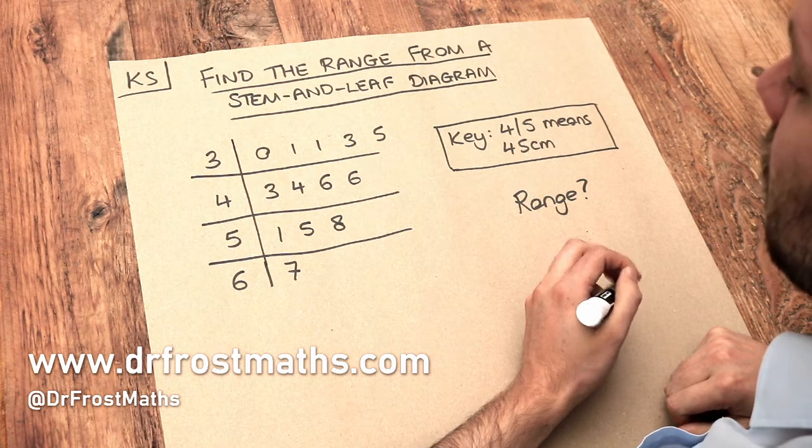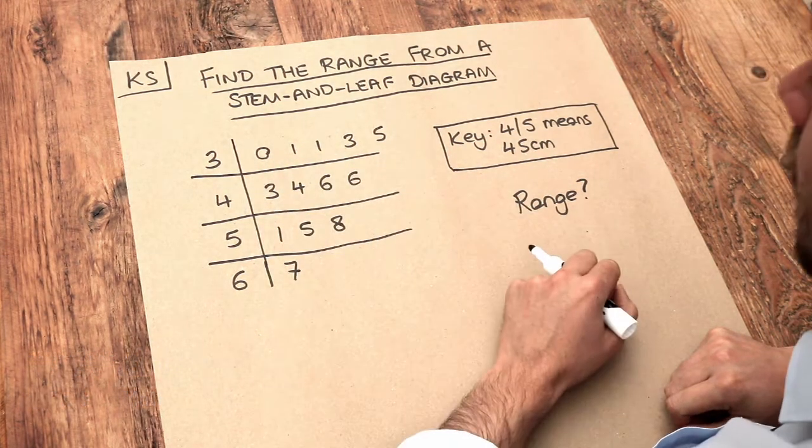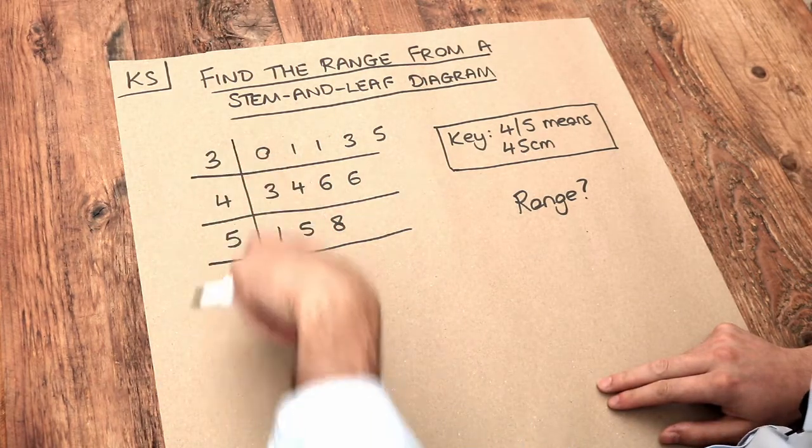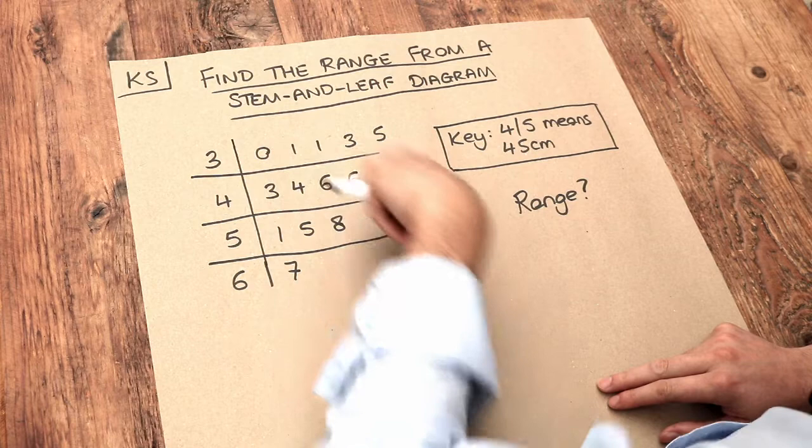Now let's remind ourselves what each of the values in the stem-and-leaf diagram mean. These digits are the first digit of each number and these digits are the second digit of each number.